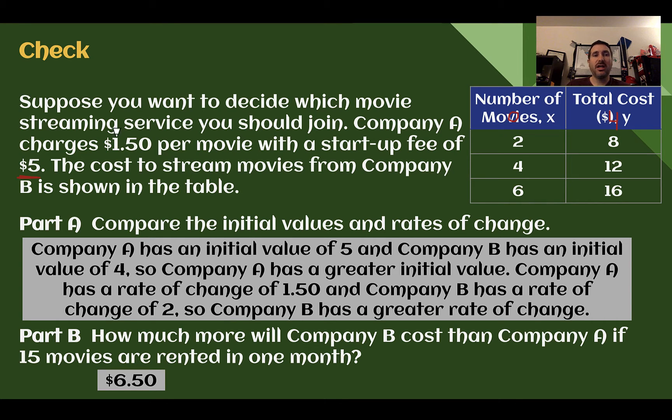But, our rate of change, Company A is $1.50 per movie. Here, be careful, it's not $4 per movie, it's $4 for 2 movies. So if $4 was 2 movies, then it's $2 for 1 movie. So Company A $1.50, Company B is $2.00, so B has a greater rate of change.